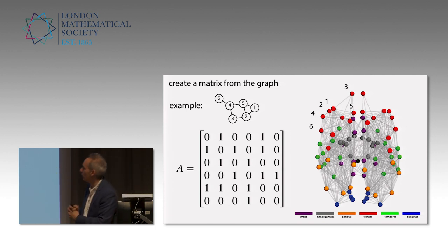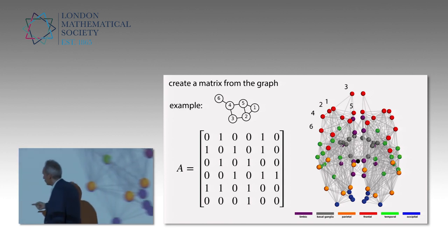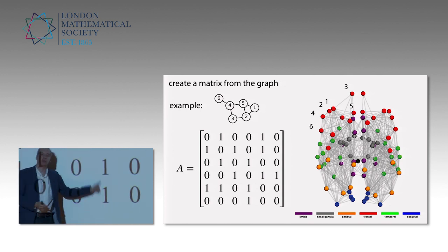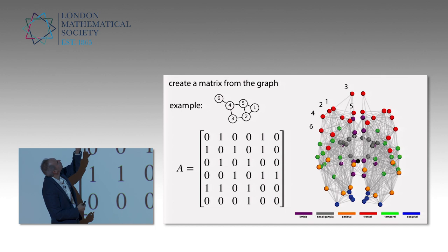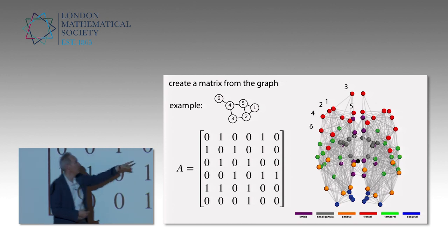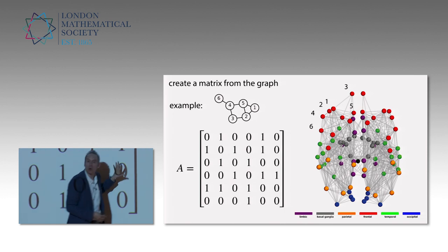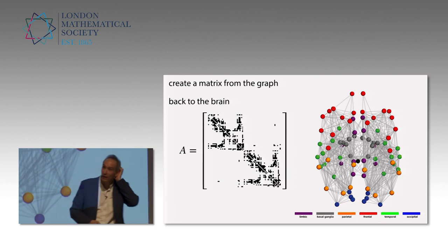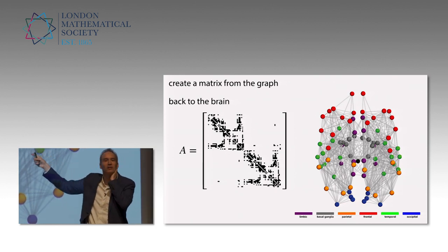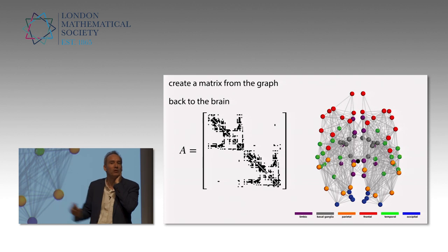Number 6 is only connected to 4. So this is the 6th row. Number 4 is connected to 3, 5, and 6. So now all the information about the graph is contained in that matrix.